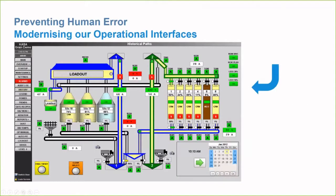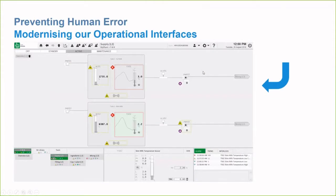Here's an example of a typical mimic — and to be fair I've probably drawn a few of these in the past. It has great use of color and lots of objects, but all this is really doing is distracting the operator from noticing the important information. Whereas if we go now to the new situational awareness mimic, the important information becomes a lot clearer.